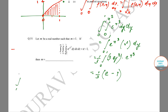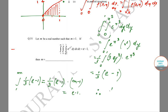Now integrating from 1 to m: (1/3)(e − 1) times (m − 1). We are told this equals (e − 1), so (1/3)(m − 1) = 1, giving m − 1 = 3, which implies m = 4. So m = 4 is the correct answer.